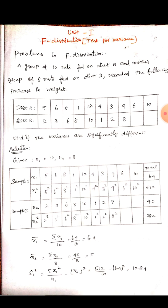Similarly, for sample 2 we have X2 data and also X2 square values. X2 total and X2 square total are computed correspondingly. Then find X1 bar, the mean of sample 1: summation of X1 divided by total number of data, which is 10. The answer is 6.4.